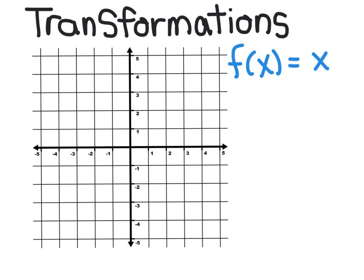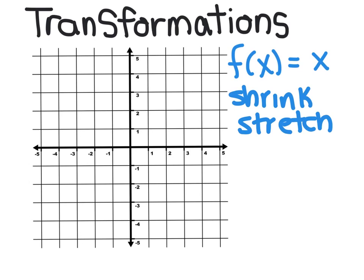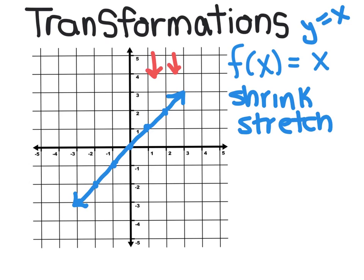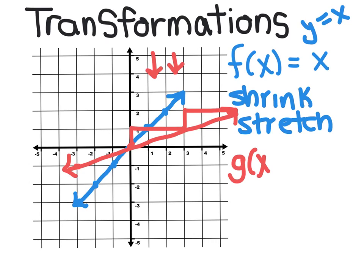Another common transformation is a vertical shrink or vertical stretch. Taking a simple line y equals x, a shrink is like pushing down on it from above, making the line lower. The red line has a slope of up 1 over 3, so its equation is g of x equals one-third x. The one-third causes the function to have a vertical shrink.